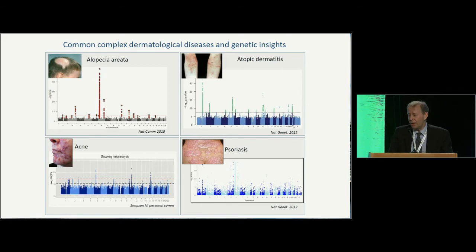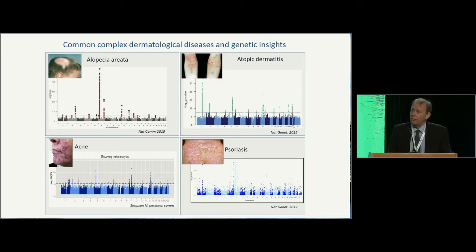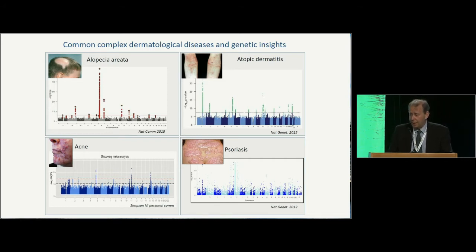Acne is something we're actively working on, as you can see from the Manhattan plot in the bottom left. There are several peaks of association with severe acne vulgaris in pathways not previously thought to be relevant, but biologically interesting, like Wnt signalling and laminin. You'll be hearing more about that in the months ahead. But the subject of my talk today is psoriasis.